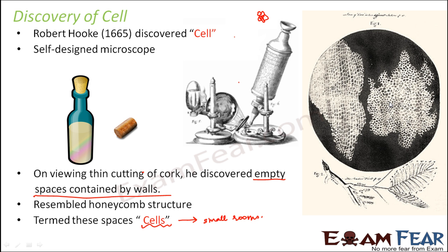Robert Hooke was the first person to discover cell, but by this time he did not have any knowledge on the internal structure of a cell — what the cell is made up of, what all things are present inside. He just said that cells are present in all living organisms and they are filled with juices.